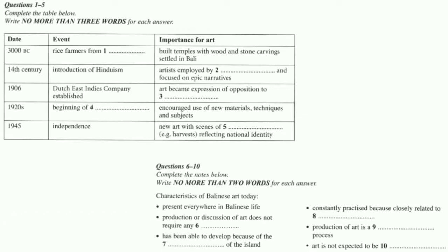Expatriate artists from Holland and Germany settled on the island, bringing paper, Chinese ink, and other new materials with them. They worked with local artists, encouraging them to experiment with concepts like naturalism, expressionism, light and perspective, as well as to move away from the traditional focus on narrative painting towards something closer to their own experience.